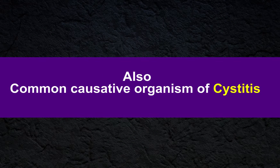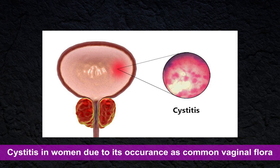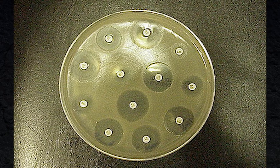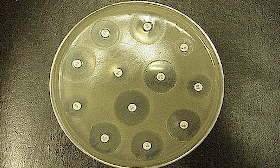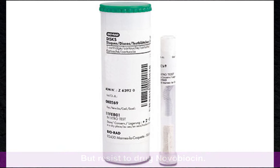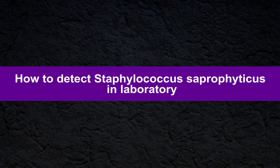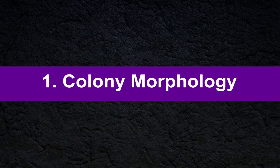It is also a common causative organism of cystitis in women, due to its occurrence as common vaginal flora. Usually it is sensitive to a wide range of antibiotics, but using the drug novobiocin we can distinguish it from Staphylococcus epidermidis and other coagulase-negative staphylococci, due to its resistance to novobiocin.